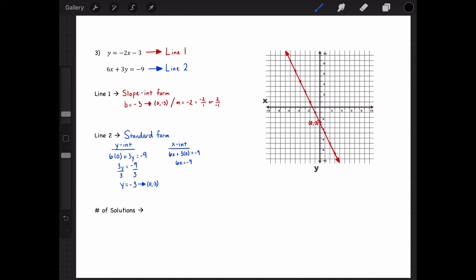Plugging in 0 for y to find the x, I can divide both sides by 6, and that allows me to get x equal to negative 3 halves. Which means my x-intercept is negative 3 halves comma 0.